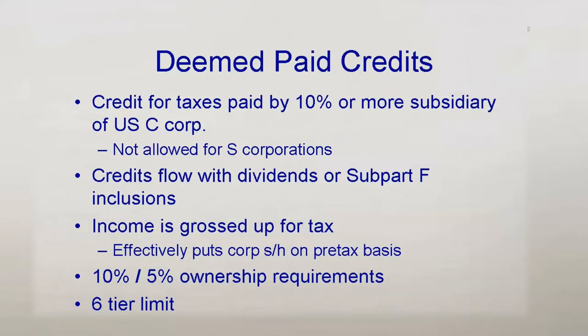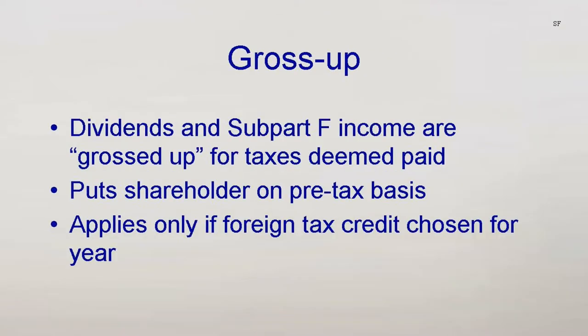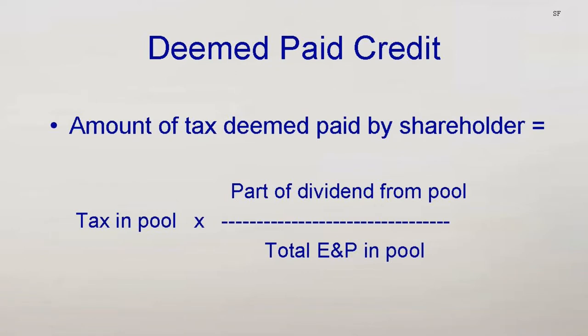Corporations get a credit not only for foreign income tax they pay, but also for taxes paid by their subsidiaries. When a corporation receives a dividend from a 10% or more subsidiary, a portion of the foreign income tax paid by the subsidiary flows with the dividend. The taxable amount of the dividend is increased, or grossed up, by the amount of tax, so that the corporation is taxed on pre-tax income, much the same as if it had earned the income itself.